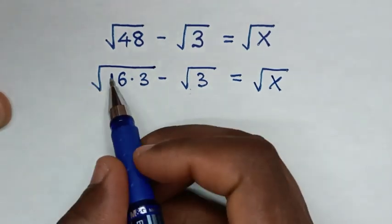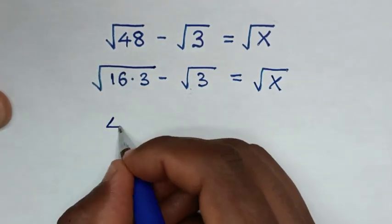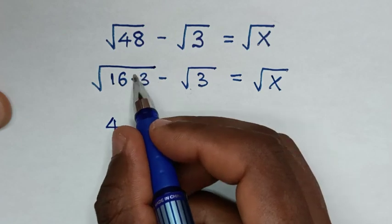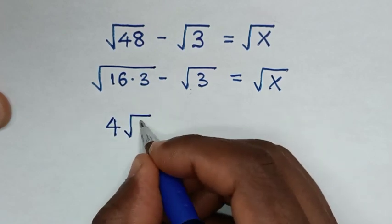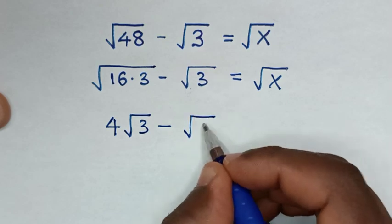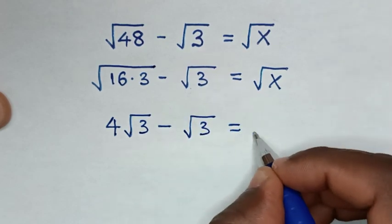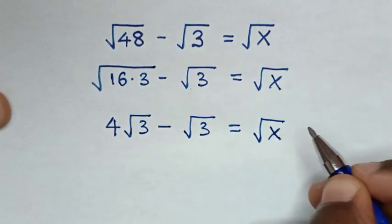Then square root of 16 is 4, so 4 times square root of 3 minus square root of 3 equals square root of x.